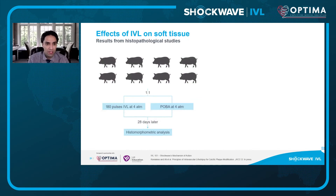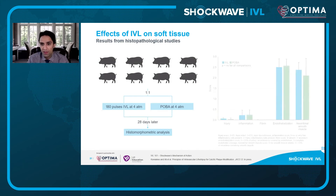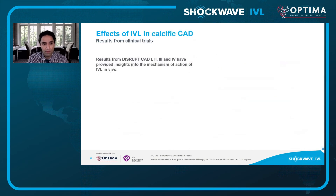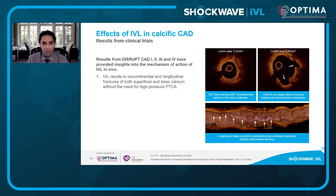Regarding the effects of IVL on soft tissue: a study of eight pigs in which animals underwent 180 pulses of IVL at four atmospheres, followed by recommended balloon angioplasty at four atmospheres and histomorphometric analysis. This randomized comparison of plain old balloon angioplasty versus IVL shows almost no difference in important healing metrics for the vessel wall — no difference in injury score, inflammation score, endothelialization, or neointimal smooth muscle cells. The Disrupt CAD 1, 2, 3, and 4 trials have provided insight into the mechanism of action in vivo, showing repeatedly that calcium fracture leads to improved vascular compliance, allowing circumferential stent expansion and further luminal gain.